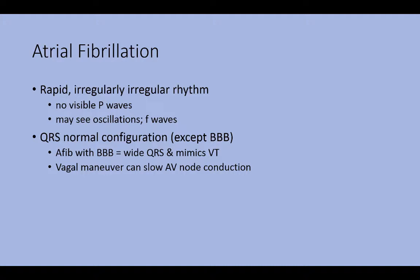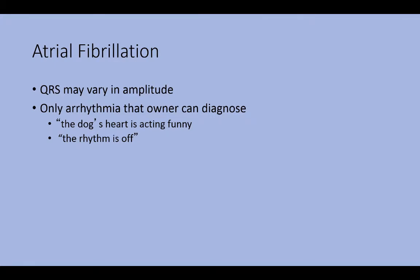Atrial fibrillation with bundle branch block will have a wide QRS complex and can mimic ventricular tachycardia. A vagal maneuver may slow AV node conduction and confirm it was supraventricular tachycardia. With atrial fibrillation, the QRS complexes may vary in amplitude. Notably, atrial fib is the only arrhythmia that the owner diagnoses — whereas other heart diseases cause complaints about tiredness or breathing difficulty, owners with afib dogs call and say the heart rhythm feels abnormal, because they can feel the irregular rhythm through the chest wall.